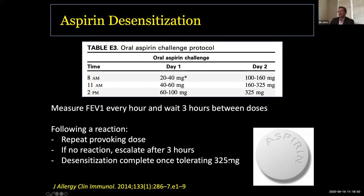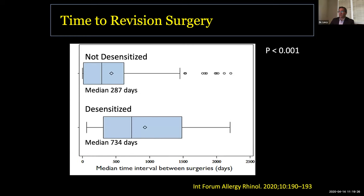This is a recommended protocol: every three hours you give an increasing dosage of aspirin, measuring FEV1 both prior and every hour throughout the test. If you have a positive reaction, you repeat the provoking dose; if no reaction after three hours, escalate to the next dose. Desensitization is considered complete once the patient tolerates 325 milligrams without further symptoms. Looking at the Market Scan study data, the time to revision surgery is significantly longer among desensitized patients — median 287 days without desensitization, increasing to 734 days with it — showing significant benefits in both patient symptoms and revision surgery rates.